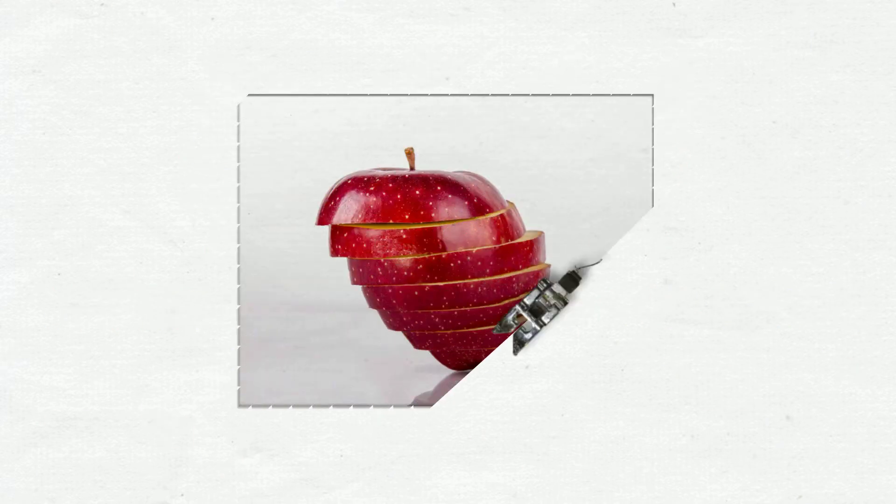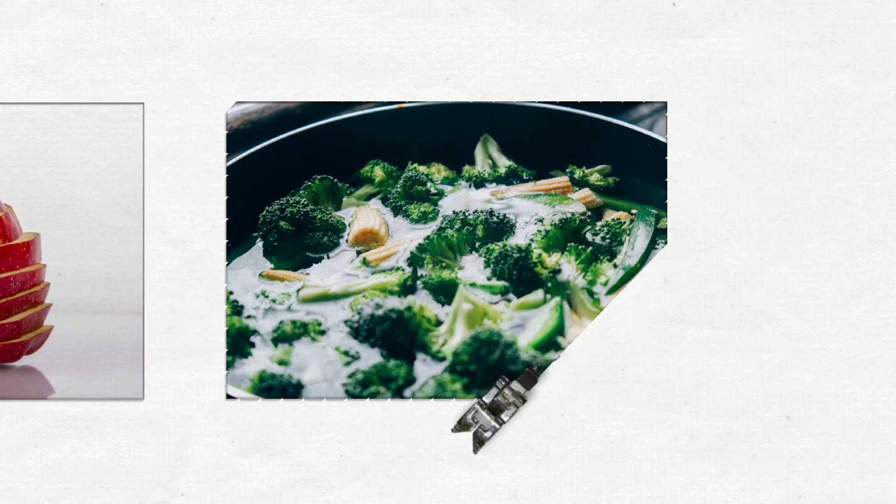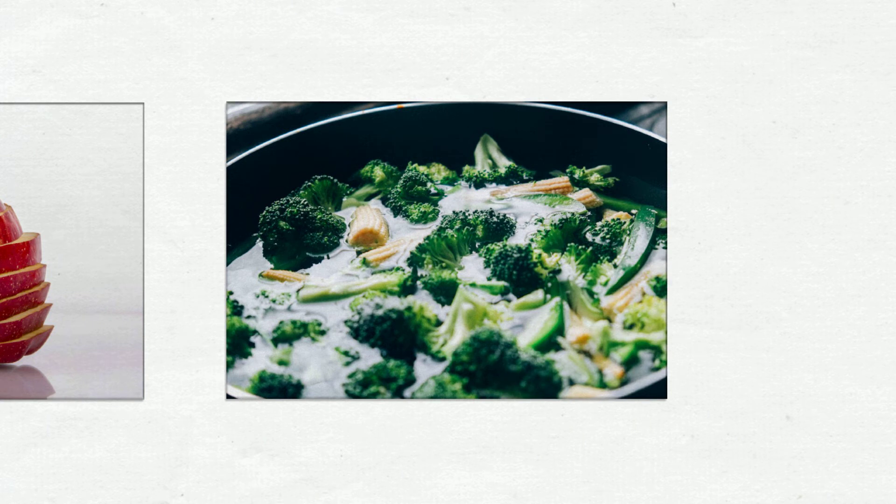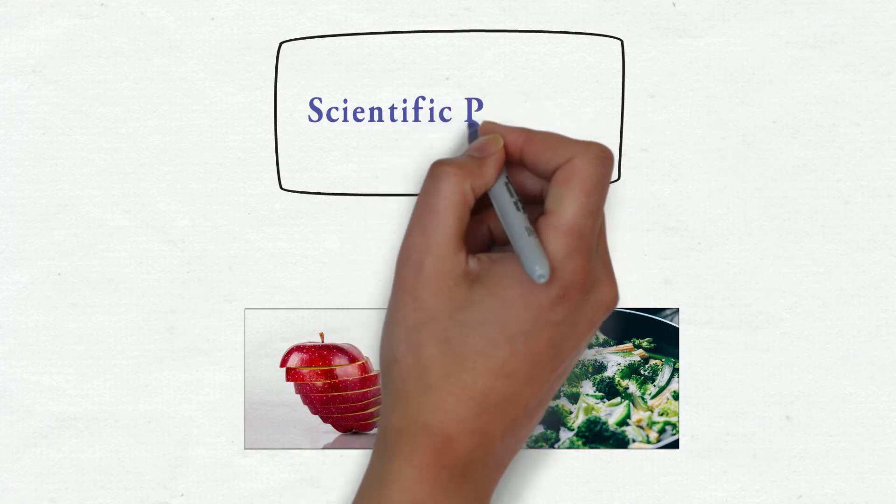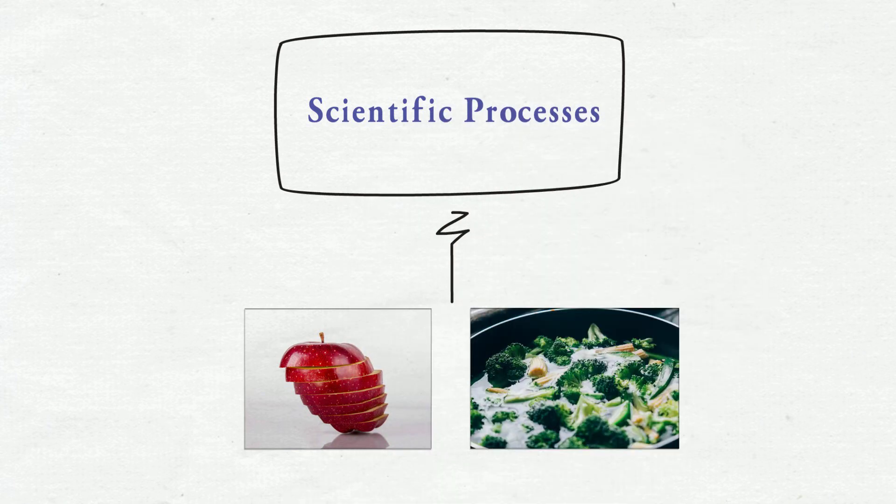Imagine that adding lemon juice to a sliced apple may stop the browning process, or recall the color change in vegetables after cooking and heating in your kitchen at home. These phenomena are considered scientific processes in food science.